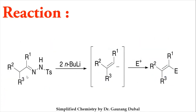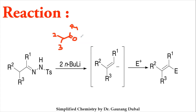Moving to the reaction: the starting material is tosylated hydrazine. How can it be prepared? It is straightforward. Here we have a compound written with substituents R1, R2, and R3. You should take a ketone — if you react this ketone with hydrazine, the process begins.